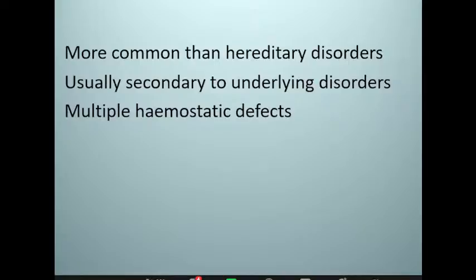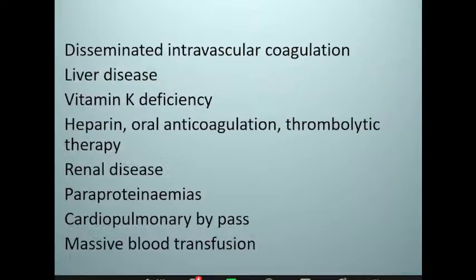Acquired coagulation disorders are more common than the hereditary disorders, and they are usually secondary to an underlying disorder, which may be hematological or non-hematological, and there are multiple hemostatic defects present in this clinical spectrum. Some of the acquired conditions of hemostatic disorders include disseminated intravascular coagulation, of which there are a number of causes: severe sepsis, obstetrical causes, and others like snake bites.